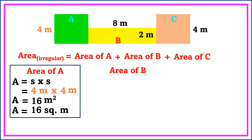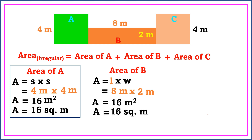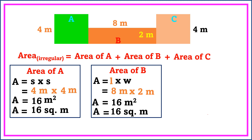Next, we're going to find the area of figure B. Figure B is in the shape of a rectangle, so we use the formula length times width. The length is 8 meters and the width is 2 meters. 8 meters times 2 meters is equal to 16 square meters. This is the area of figure B.